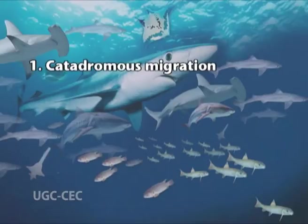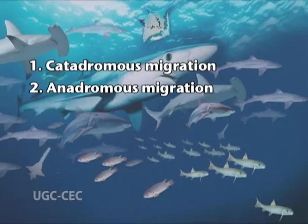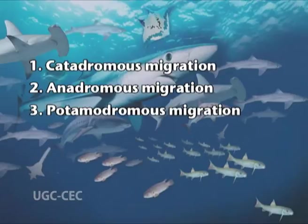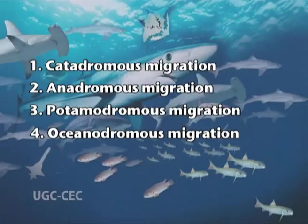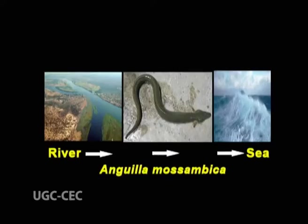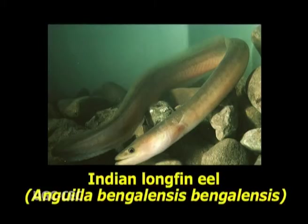There are four types of migration in fishes: catadromous migration, anadromous migration, potamodromous migration, and oceanodromous migration. First is catadromous migration — the water course the fish follow from the river to the seas for spawning is called catadromous migration. Examples are Indian long-fin eel and African long-fin eel.